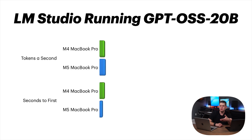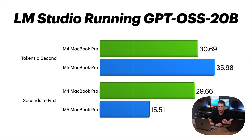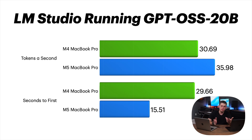I also did some LLM tests on both machines. Running LLM Studio with GPT OSS 20B, the time to the first token was much improved on the M5 — about half the time compared to the M4 to actually start working. The M5 was also generating more tokens per second, which means it's going to be able to run LLMs on the machine and generate results faster.